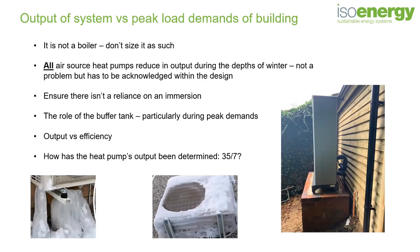Many manufacturers provide an output figure determined at a flow temperature of 35°C — very low, only achievable in new builds or underfloor circuits — and based on an outside temperature of +7°C, which is above the average UK winter heating temperature. You want to cut through that and look at how the heat pump performs at -7°C: how does it stand up with six inches of snow on the ground and a cold biting wind? If it can't match the building's peak load under those conditions, you need a bigger unit or to look at alternatives.